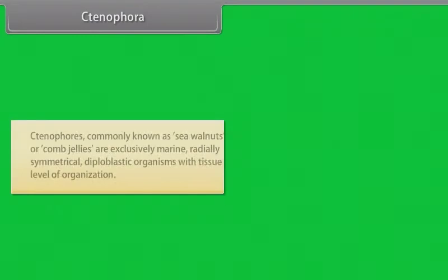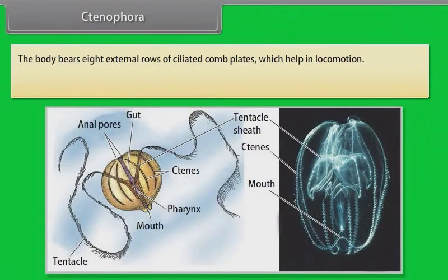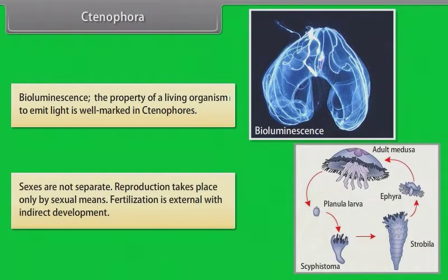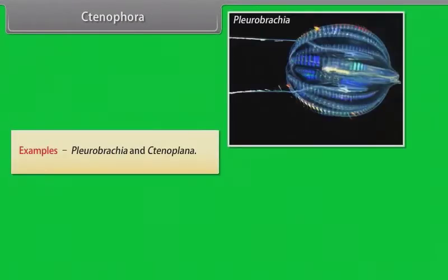Ctenophora: Ctenophores, commonly known as sea walnuts or comb jellies, are exclusively marine, radially symmetrical, diploblastic organisms with tissue level of organization. The body bears eight external rows of ciliated comb plates which help in locomotion. Digestion is both extracellular and intracellular. Bioluminescence — the property of a living organism to emit light — is well-marked in ctenophores. Sexes are not separate; reproduction takes place only by sexual means. Fertilization is external with indirect development. Examples: Pleurobrachia and Ctenoplana.